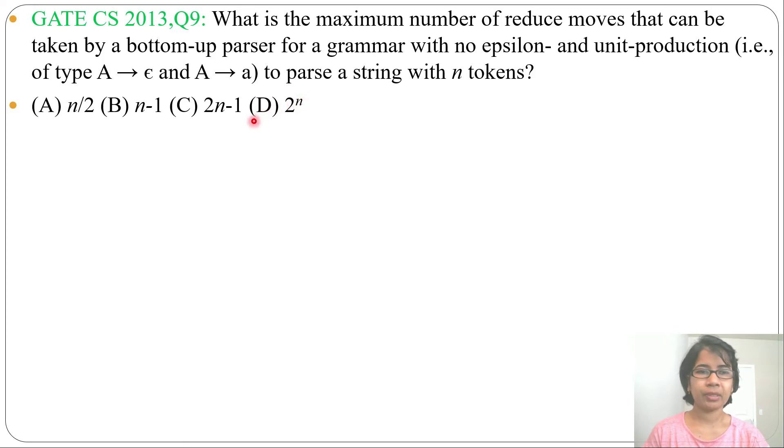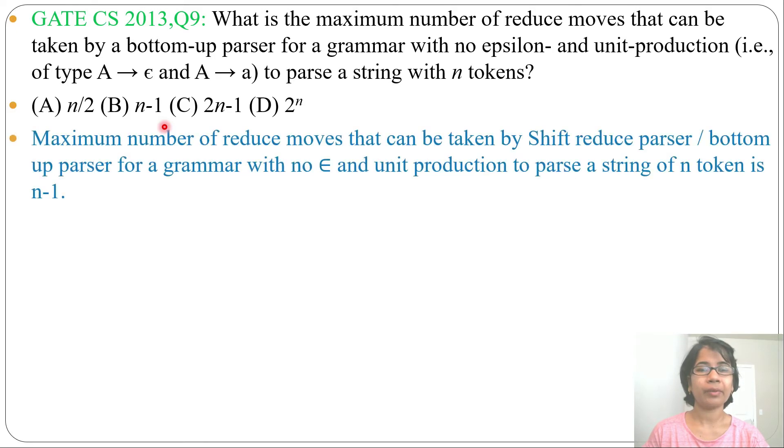This is a direct question. The answer will be n-1. Maximum number of reduce moves that can be taken by a bottom-up parser or you can say shift-reduce parser for a grammar with no epsilon and no unit production is n-1.